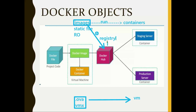The registry is called Docker Hub. All the official images — like a CentOS image, MySQL, PHP, Ubuntu, and so on — are already configured and available. You can just pull them and use them. But for enterprise applications with your own configuration, you can also create your own images.